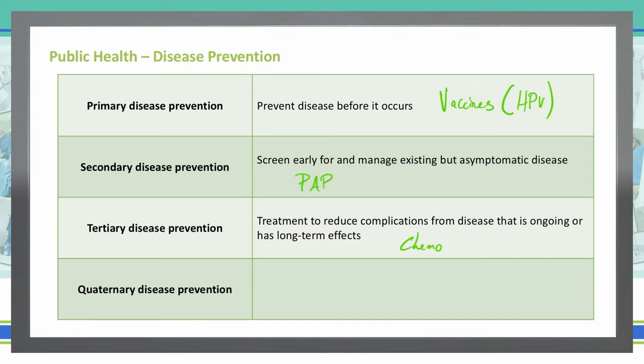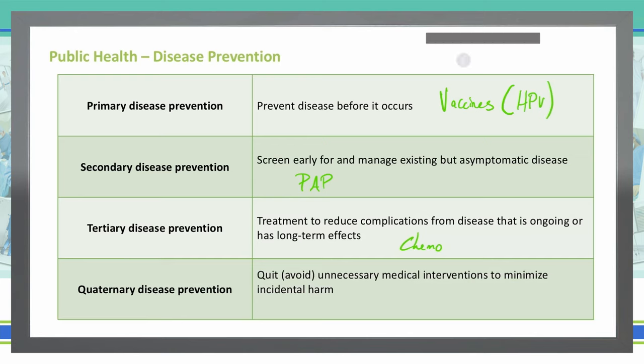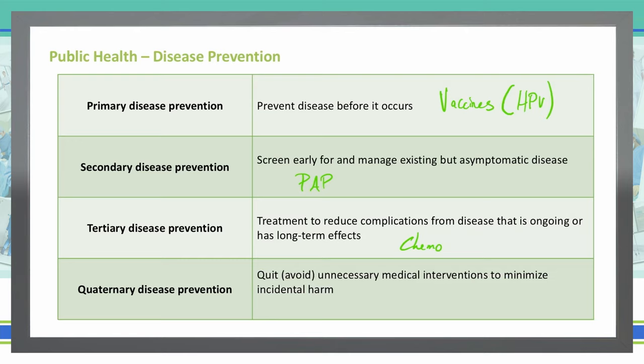Finally, quaternary disease prevention is where we avoid or quit unnecessary medical interventions to minimize causing harm to a patient. This includes reducing unnecessary imaging studies and reducing polypharmacy. If patients are on multiple medications, those can cause negative effects — some medications have side effects that create other problems requiring yet another medication. So we don't want to give patients too many medications due to that polypharmacy issue.